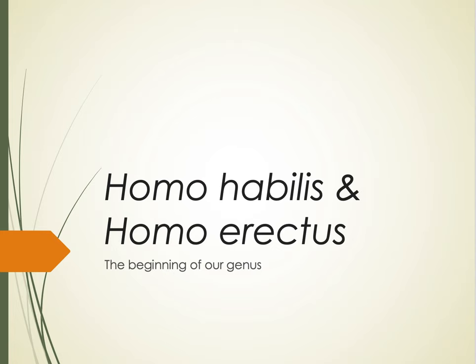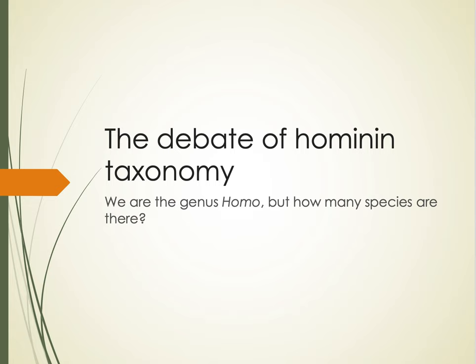I want to make a quick point about the debate on hominin taxonomy. We are members of the genus Homo, but there is a little bit of controversy as to how many species there are, and this is what a lot of your early Homo lab is about. There are two major trains of thought: one is that a lot of these fossils can be classified as distinct species, which means they would not have been able to interbreed easily. The other is that these fossils are simply variations of a single species.